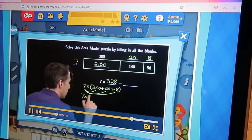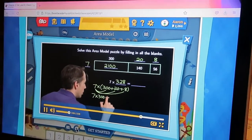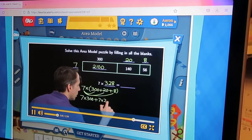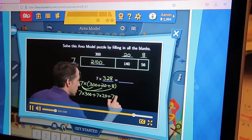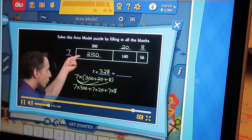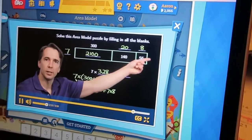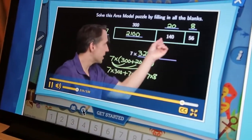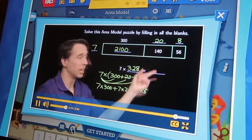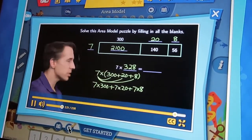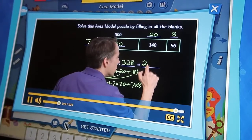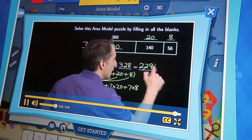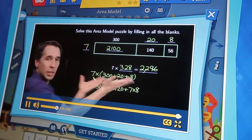Now imagine we use the distributive property on this product. We write this 328 as 300 plus 20 plus 8, and the distributive property would tell us you get 7 times 300 plus 7 times 20 plus 7 times 8. So we just take this number and multiply it by each of the numbers in this sum. And those are the three areas we see right here. And of course we just add them all up. Take the 56, add the 140, get 196, 196 plus the 2,100 gives us 2,296. And our puzzle is complete.